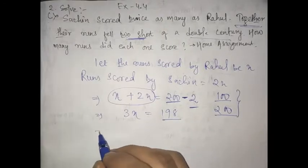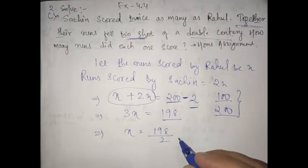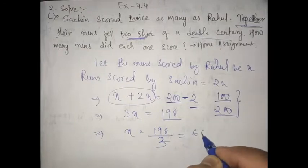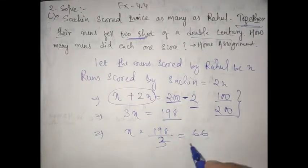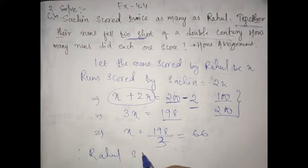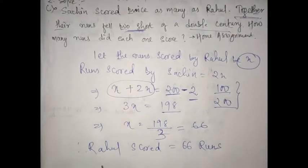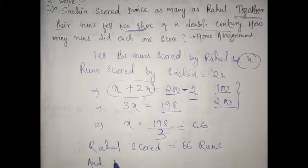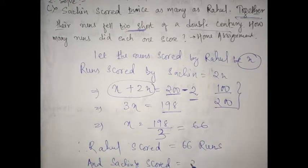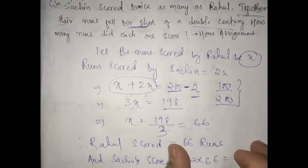So here it is 198, and X is equal to 198 by 3. When you calculate this it is 66. Therefore, Rahul scored 66 runs. And Sachin scored twice of Rahul, that is 2 into 66 equals 132 runs. I hope this is clear to you all. This was the home assignment.